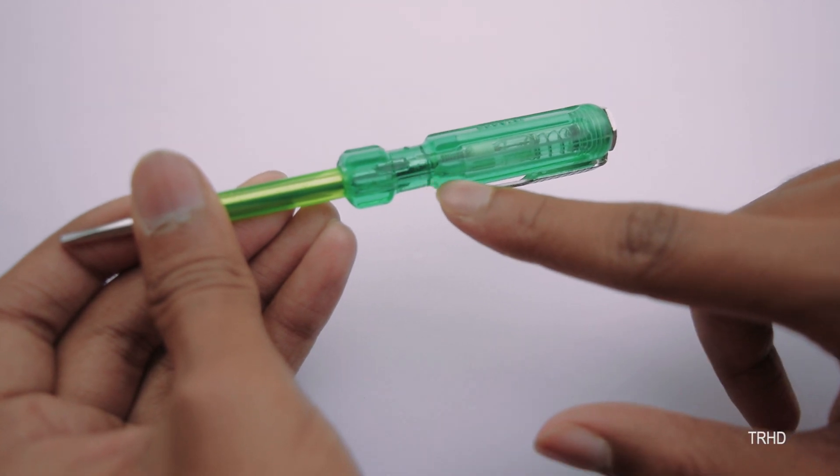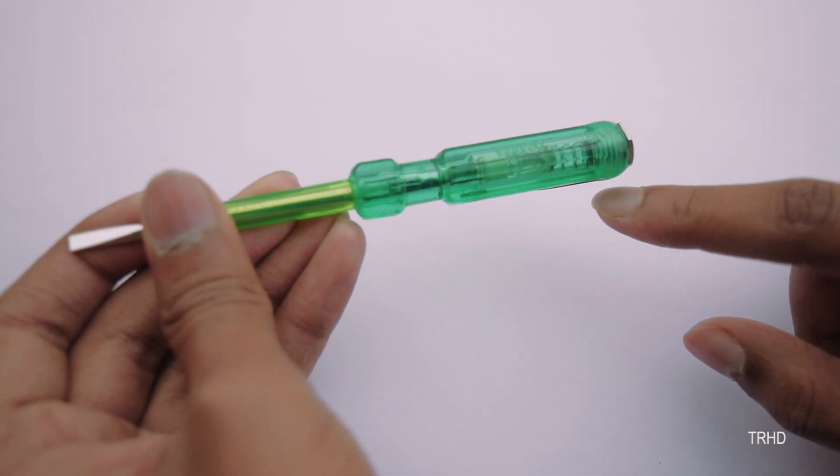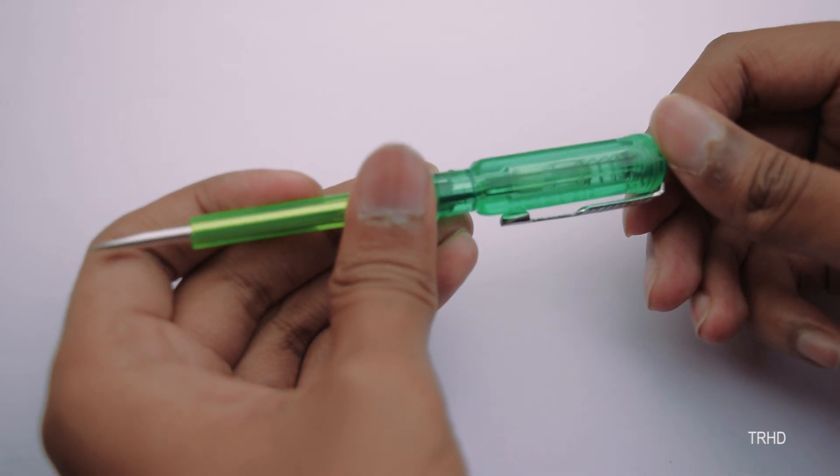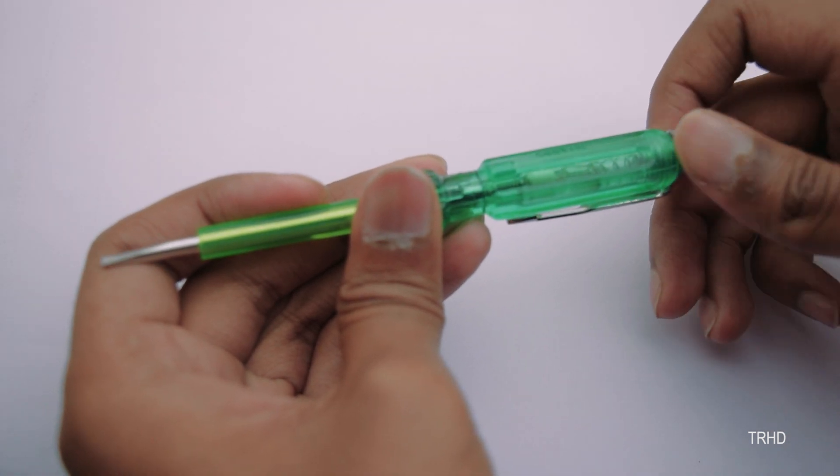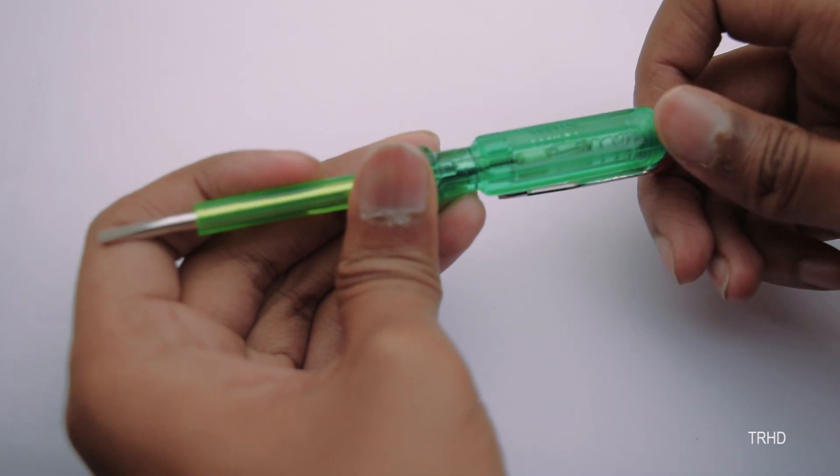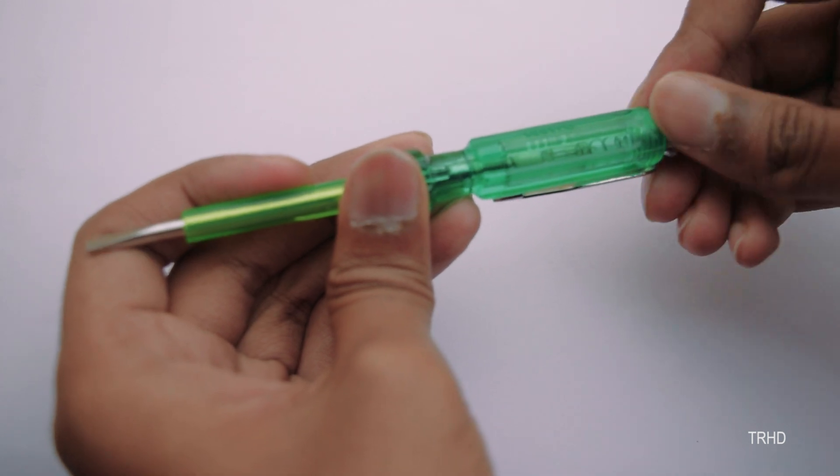You can see the neon lamp from outside. Let's open it. This is the external contact on which you can place your finger to complete the closed circuit.